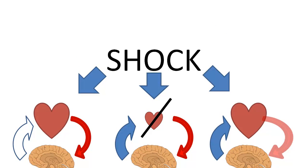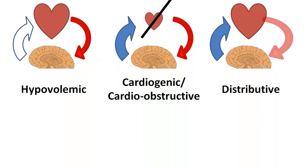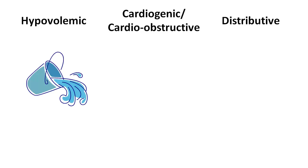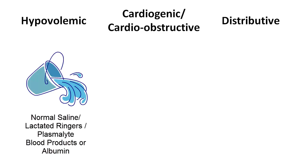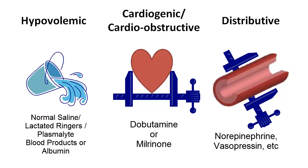It's important to identify the category of shock because each category corresponds to an appropriate treatment. For hypovolemic shock, you fluid resuscitate. For cardiogenic shock, you provide medications to increase cardiac contractility. In distributive shock, you provide medications to increase vascular tone.